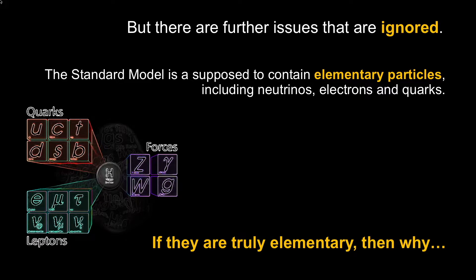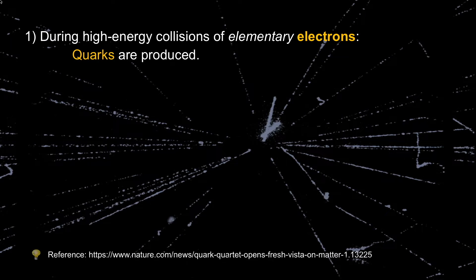There are also issues with the standard model that are ignored. The standard model is supposed to be elementary particles. Neutrinos, electrons, and quarks are elementary particles that cannot be subdivided. But if they're truly elementary, then why have experiments found things such as this?